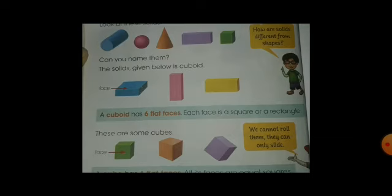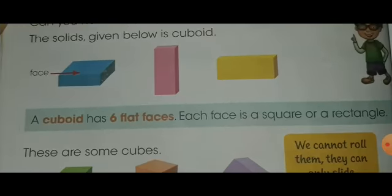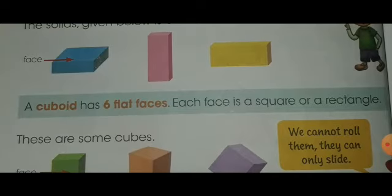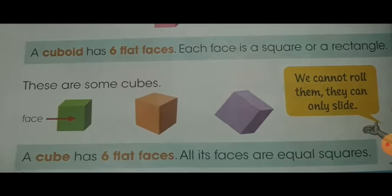These are solids. The first one is a cuboid. A cuboid has six flat faces; each face is a square or a rectangle. These are some cubes. A cube also has six flat faces, but all its faces are equal squares.